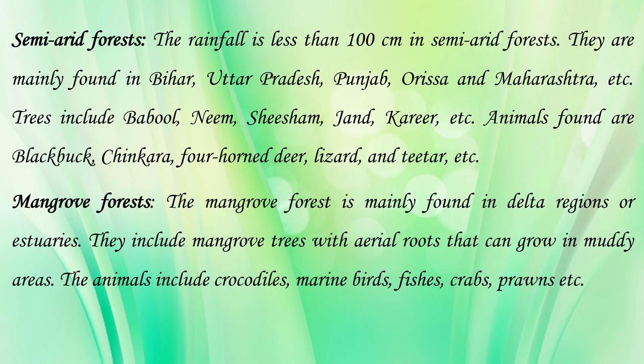Mangrove forest is mainly found in delta regions or near sea regions. They include mangrove trees with aerial roots that can grow in muddy areas. Animals like crocodiles, marine birds, fishes, crabs, and prawns are present.